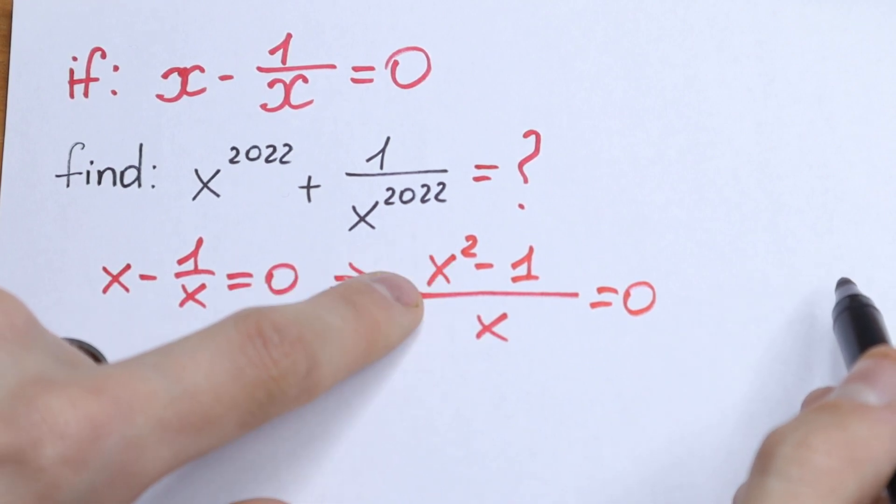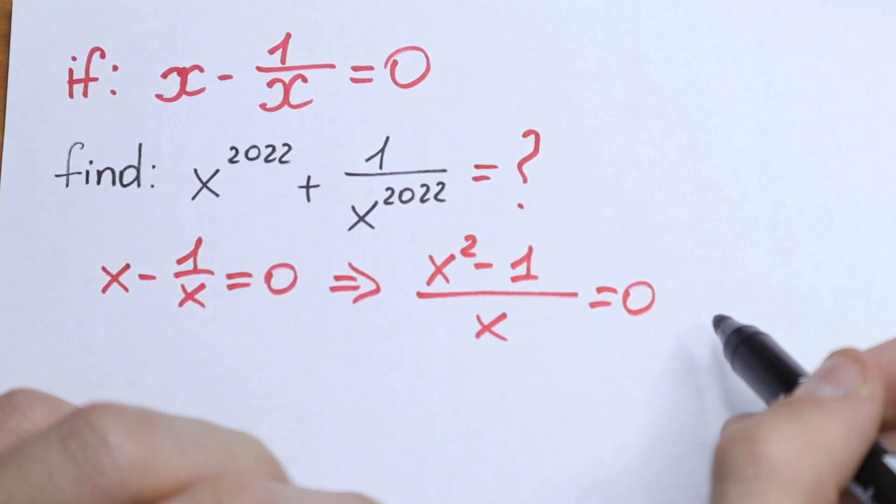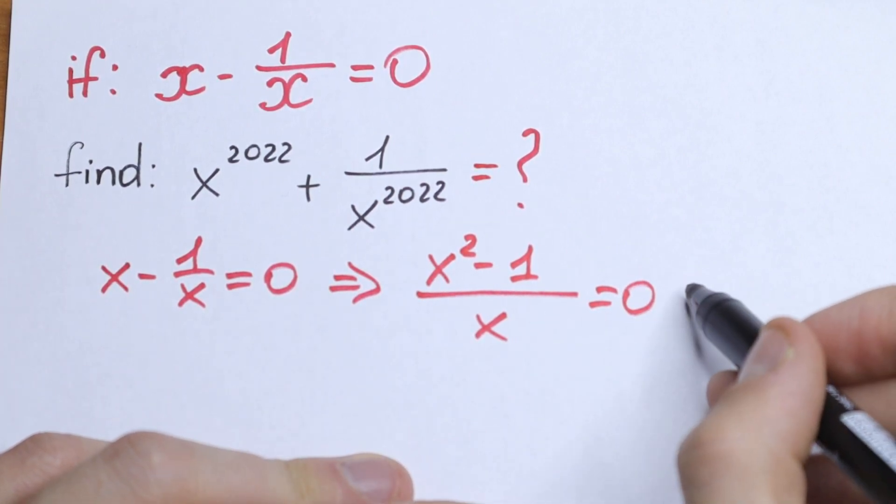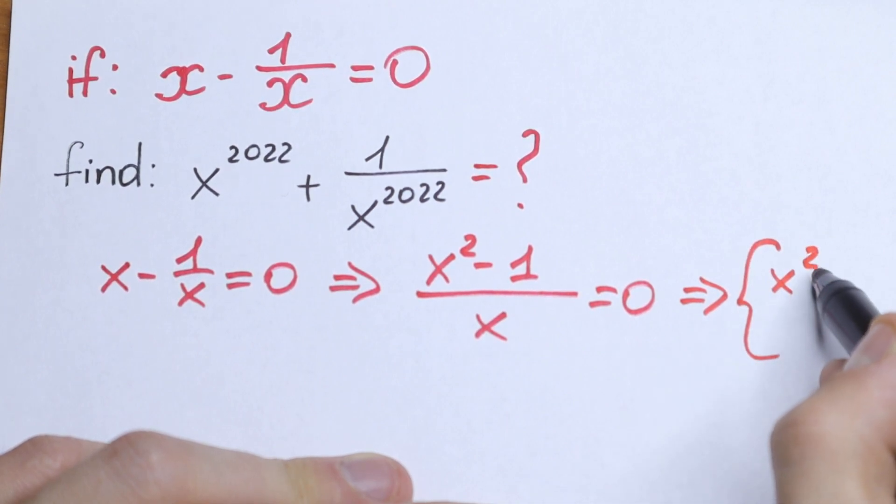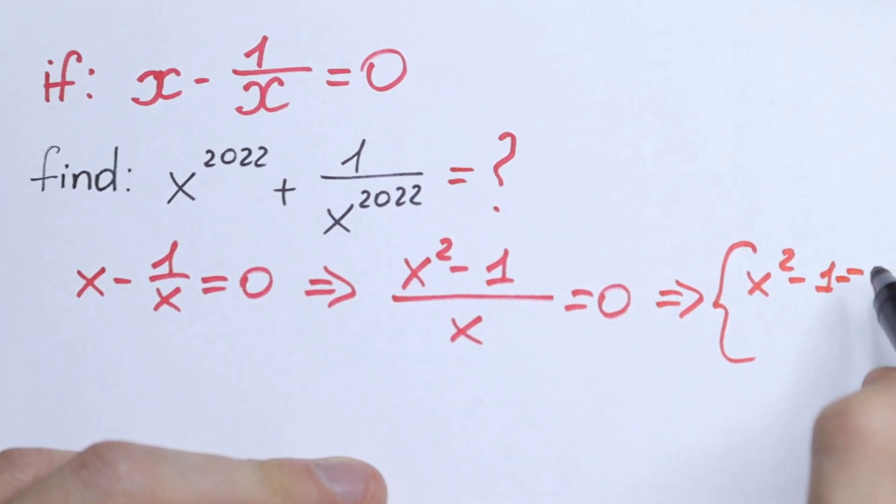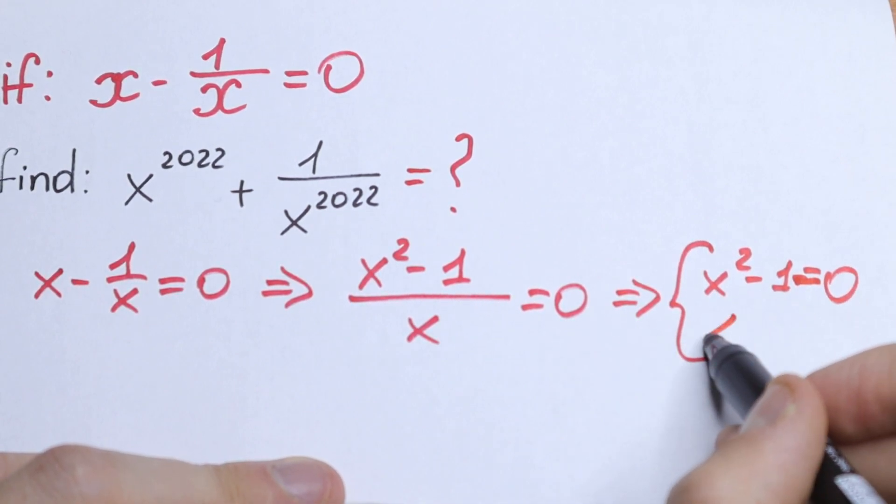Take a look, we have numerator and denominator, so we can solve this equation. Because if this equation is equal to 0, then our numerator equal to 0, x squared minus 1 equal to 0, and x is not equal to 0.